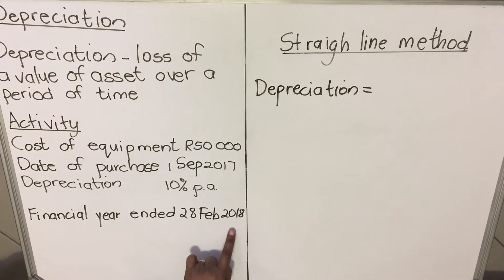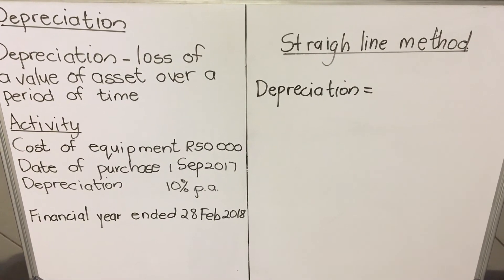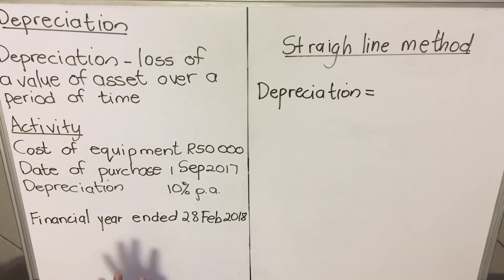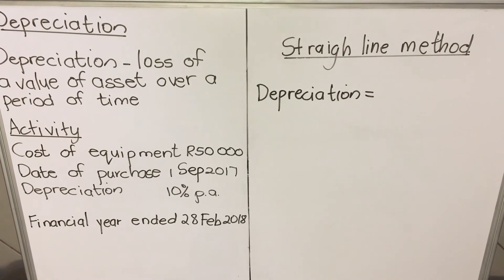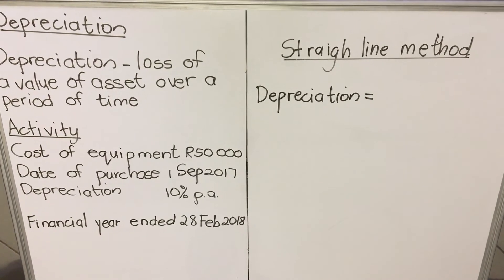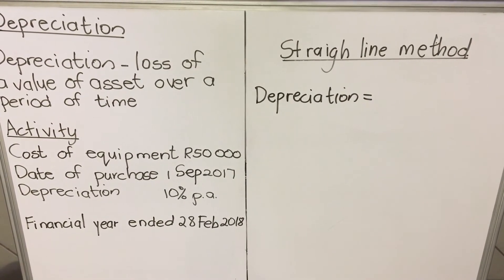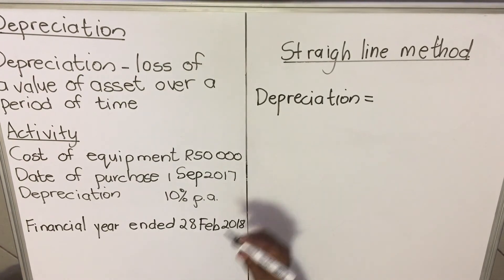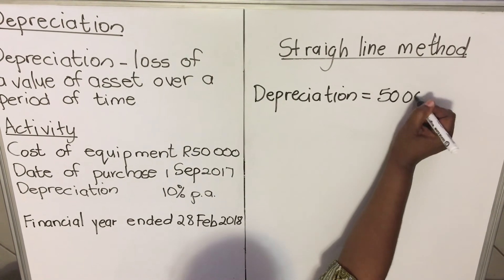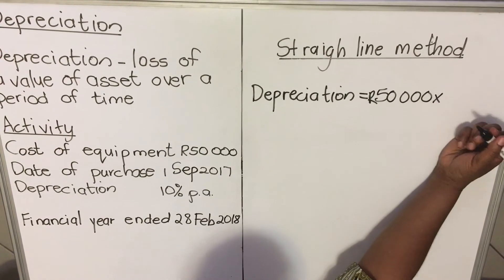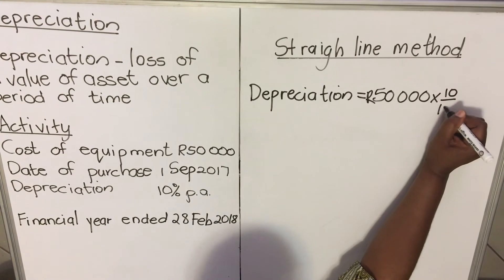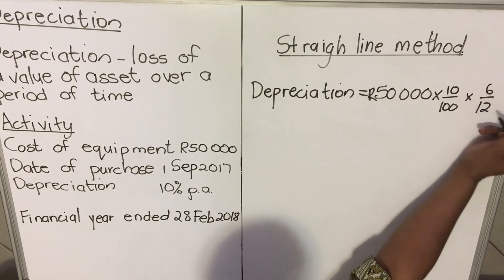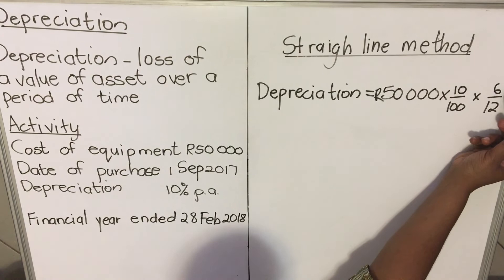How many months was the equipment in the company? Counting from September: September, October, November, December, January, February — that's six months. So you do not calculate for the whole year; you calculate only for the months you had the equipment. The formula is fifty thousand multiplied by ten over one hundred, then multiplied by six out of twelve.